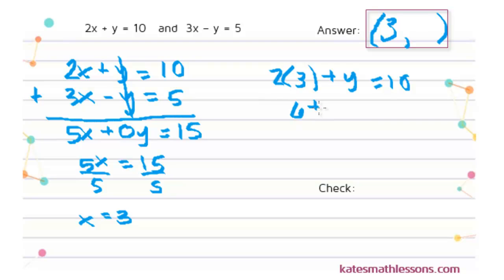2 times 3 is 6, so this gives me 6 plus Y equals 10. I can subtract 6 from both sides, and that tells me that Y equals 4. So put that in here, and that tells me that the answer is the ordered pair 3, 4.